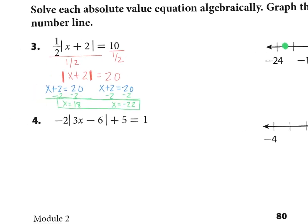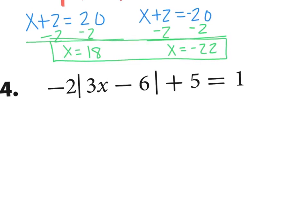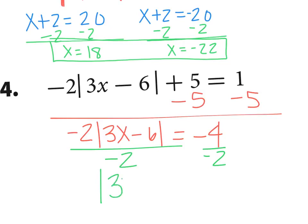I need to get x by itself — first get the absolute value by itself. So I subtract 5 from both sides, giving me negative 2 times the absolute value of 3x minus 6 equals negative 4. Now I need to get rid of the negative 2 in front — if you distribute that negative 2 in, it will throw off your answer. So I divide both sides by negative 2, and I get the absolute value of 3x minus 6 is equal to positive 2.